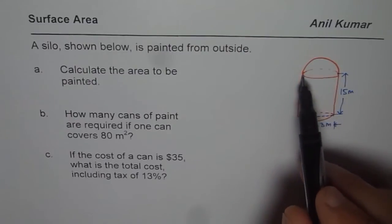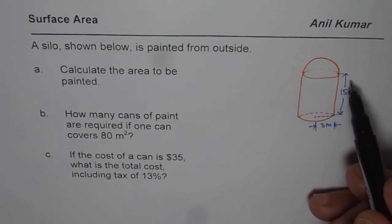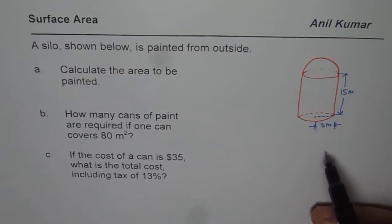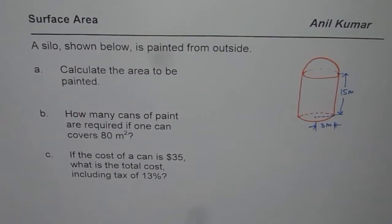We are given a silo which is a combination of the cylindrical part with a sphere on the top whose height is 15 meters and the radius is 3 meters. You need to calculate the surface area of the whole structure from outside.